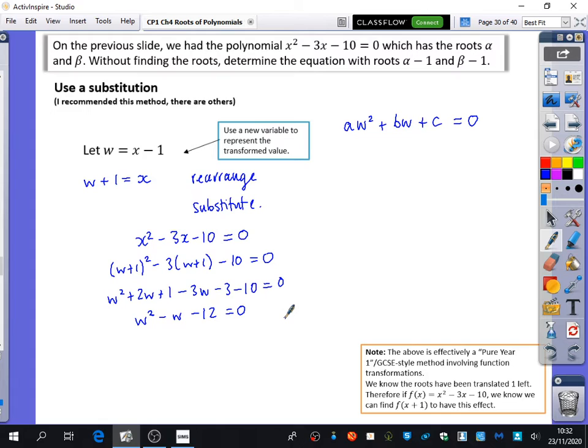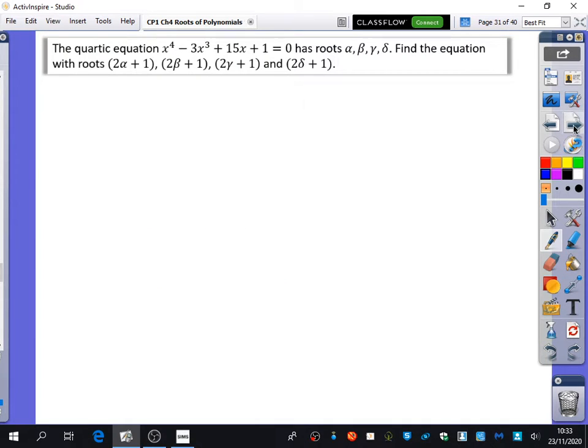Andrew asks: If you look at the equation before and after, there's been 2 removed from the coefficient on x and 2 removed from 10. Is that something which normally happens? No. The difference of 2 here and 2 here is just coincidental. What I've put in this note—the above is effectively a pure year 1 or GCSE-style method involving function transformations. We know that the roots have been translated 1 left. A translation of 1 to the left is f(x + 1). That's why we're substituting in w + 1 or x + 1. Does that make sense from what we've been doing in other maths as well?